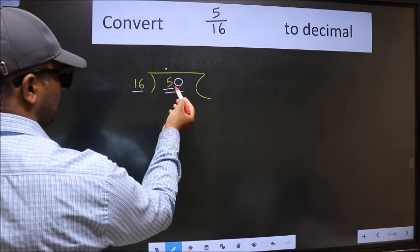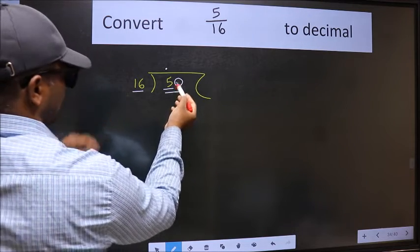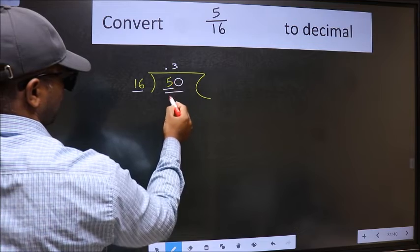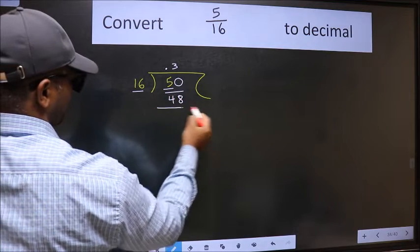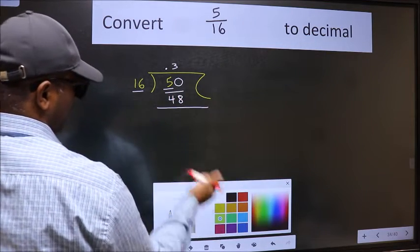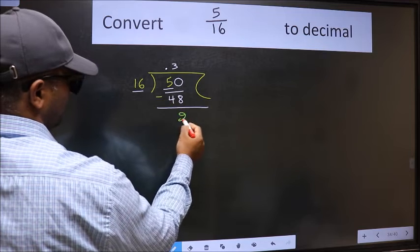So, 50. A number close to 50 in 16 table is 16 threes, 48. Now we should subtract. We get 2.